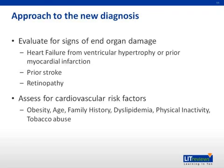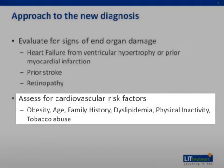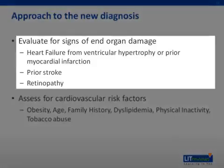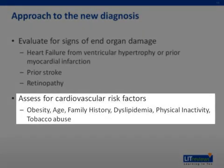When approaching a new diagnosis of hypertension, you need to think about two things: signs of end-organ damage and a cardiovascular risk assessment. It's important to figure out what is already damaged and what is at risk. When assessing for end-organ damage, look for signs of heart failure on physical exam, or an EKG demonstrating left ventricular hypertrophy. A physical exam could unmask signs of a prior stroke, and retinal examination can show arteriolar narrowing or arteriovenous nicking. Also assess cardiovascular risk factors such as obesity, age, family history of cardiovascular disease, dyslipidemia, physical inactivity, and tobacco abuse.